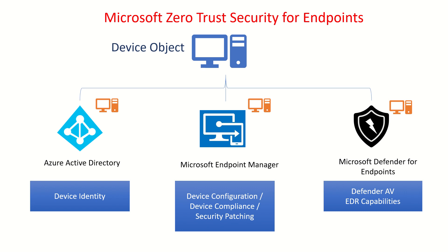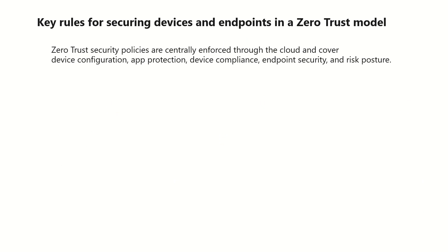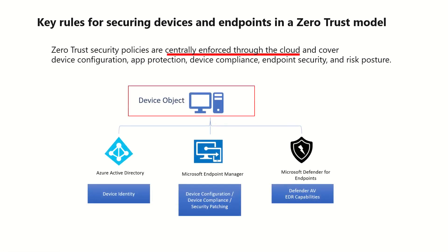Now let's look at the key rules for ensuring all devices and endpoints are secured with the Zero Trust model. The first rule states that Zero Trust security policies are centrally enforced through the cloud and cover device configuration, app protection, device compliance, endpoint security, and risk posture. Relating this to a centralized device object — it exists in all three entities and is connected.